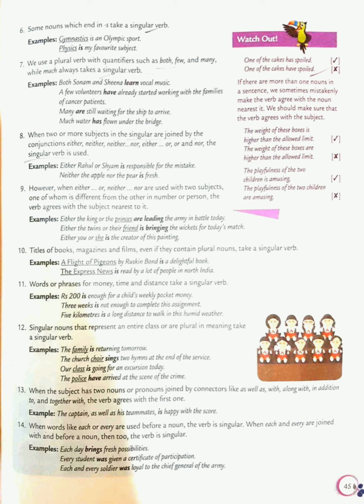Eighth is when two or more subjects in the singular are joined by conjunction either, neither, neither nor, either or, or and nor, the verb is singular. For example, either Rahul or Shyam is responsible for the mistake. Keep this in mind, if the conjunctions are used like either, neither, either or, or, neither nor, then we will be using the verb in singular if the subjects are in singular nature.